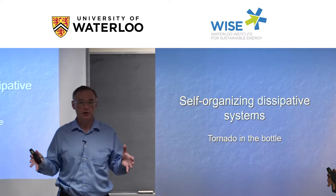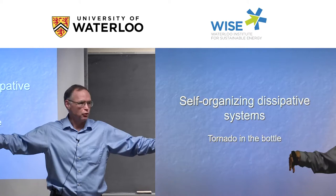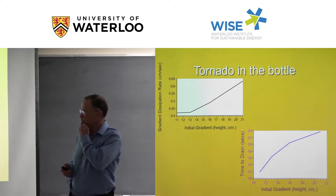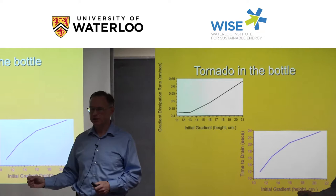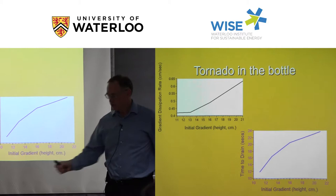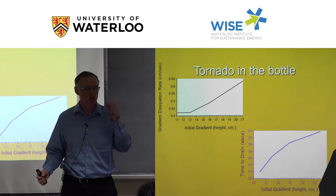Natural and human systems self-organize. Paris self-organized with small streets when people walked and had horses; as cars came along, blocks got longer and roads got wider. If you look at a tornado in a bottle — a toy with water in the top bottle draining to the bottom — the one with the tornado structure drains faster than the one that just glugs. The structured system utilizes energy more effectively. A brief experiment showed increasing exergy destruction rates, and that the system wants to stay out of equilibrium using structures to do so.